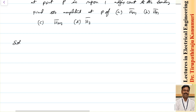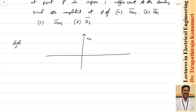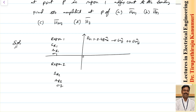To solve this, first represent the problem pictorially. The unit normal vector is 0.48 ax minus 0.6 ay plus 0.64 az. Region 1 has epsilon r1 = 4, mu r1 = 10, sigma1 = 0. Region 2 has epsilon r2 = 2.5, mu r2 = 2, sigma2 = 0.